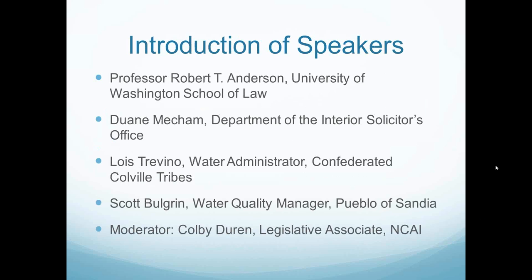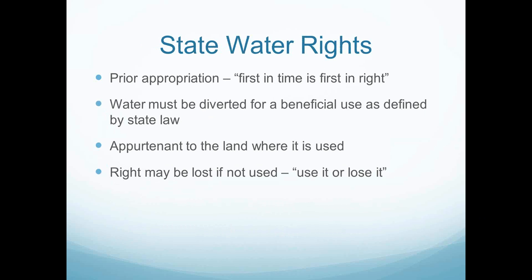Thank you very much and welcome, everybody. I'm Bob Anderson at the University of Washington Law School, and I'm a member of the Bois Forte Band of the Minnesota Chippewa Tribe. I'm going to give some background about state and tribal water rights in a cursory fashion — many of you are probably familiar with this, but we decided to do this to give everybody a common baseline. State water rights in the western United States are based primarily on prior appropriation doctrine — the idea that the first in time is the first in right in terms of access to any water source from a river or lake. Water had to be diverted traditionally for a beneficial use as defined by state law. In-stream flow uses for habitat and fisheries were not regarded as beneficial uses generally until relatively recently.